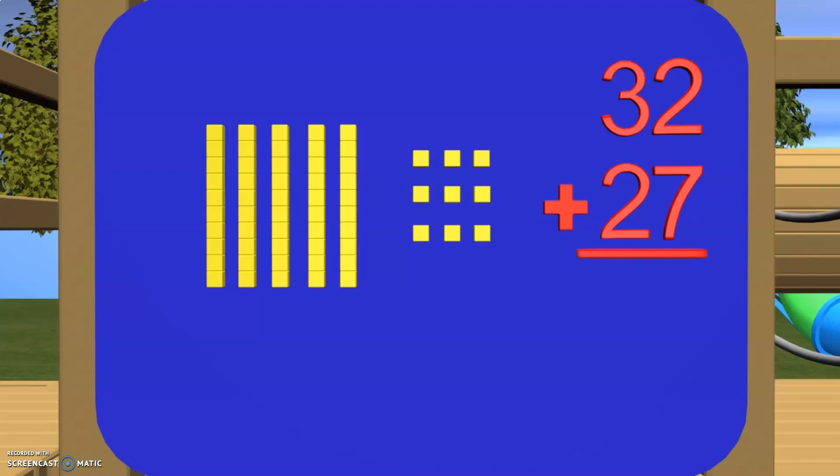So as we can see here, we have 9 ones and 5 tens. If you look at the math problem over here, you will see that 2 plus 7 is 9 and 3 plus 2 is 5. Isn't that really cool? Now let's look at a different problem.